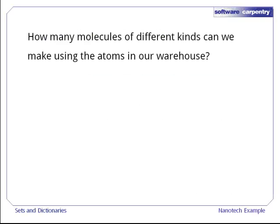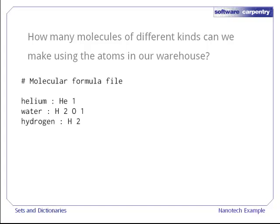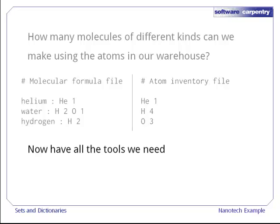If you recall, our goal is to find out how many molecules of various kinds we could make using the atoms in our warehouse. The formulas for the molecules we know how to make are stored in a file that's formatted like this, and our inventory is stored in a file that's formatted like this. Using what we've learned in the previous few episodes, we can now write a simple, efficient program to solve our problem.